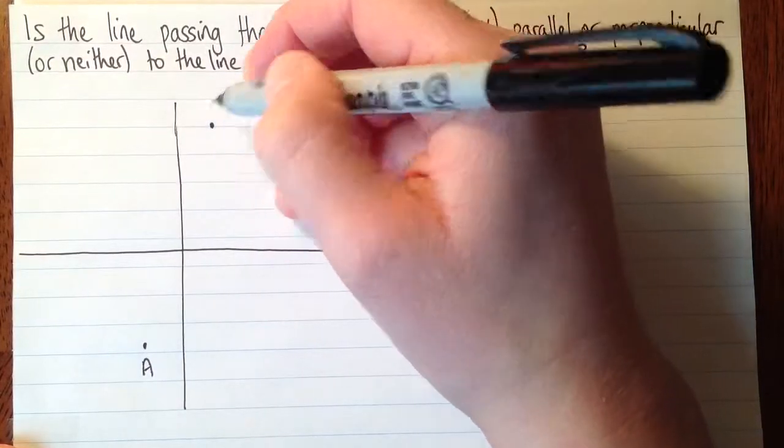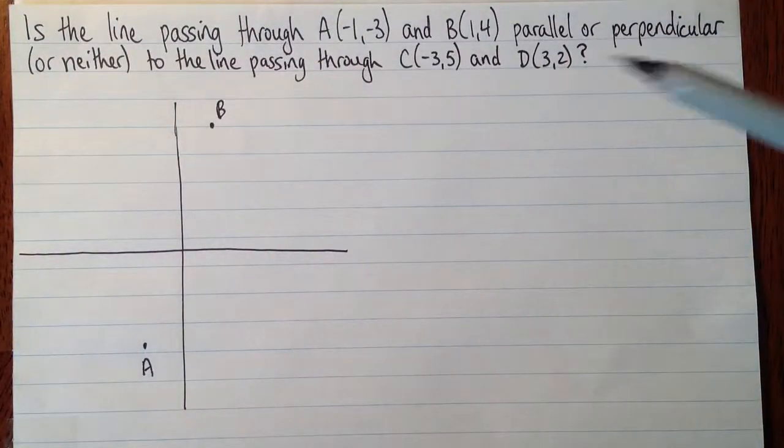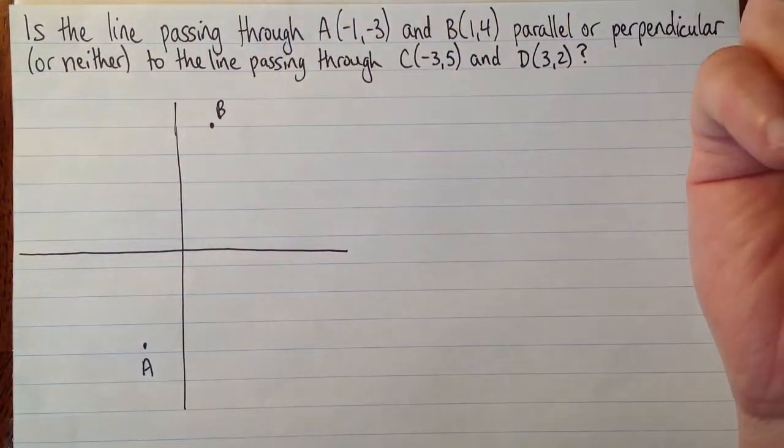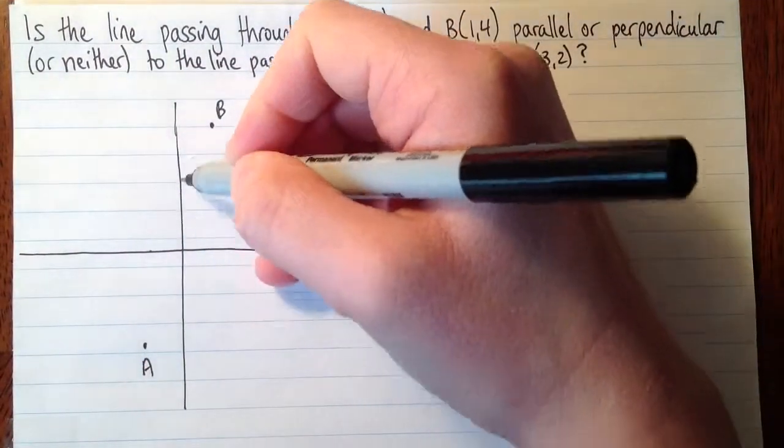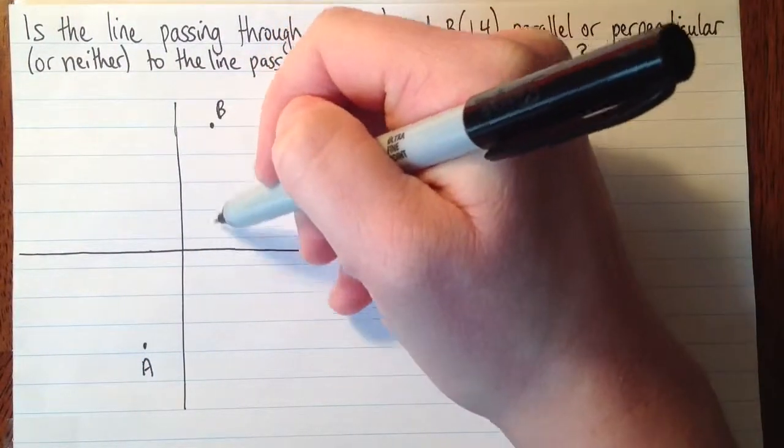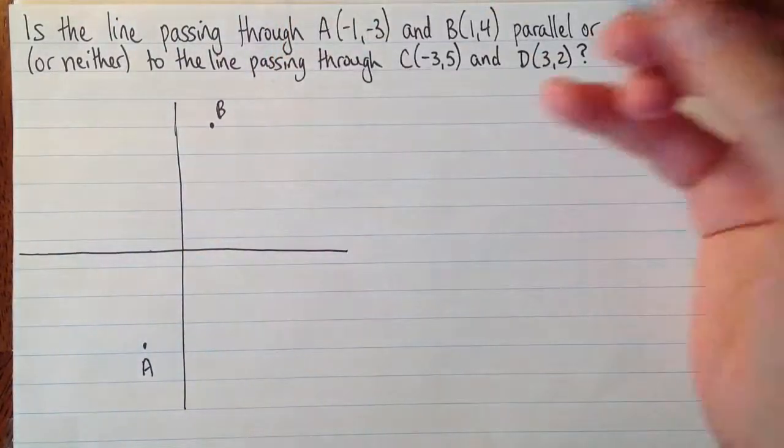So when you're drawing sketches like this, it's not important that everything be exactly right. It's just a sketch. But you want to keep an idea. If 1 is about this big, then you want 1 to be about that big. I want my B to be a bit farther from the x-axis than A is, because this is only down 3, and that's a 4.